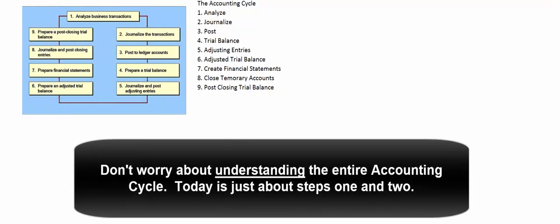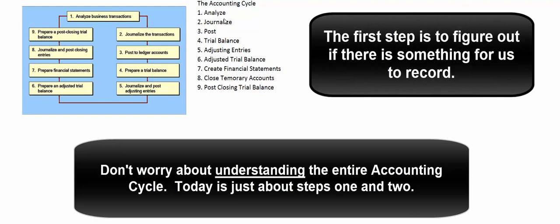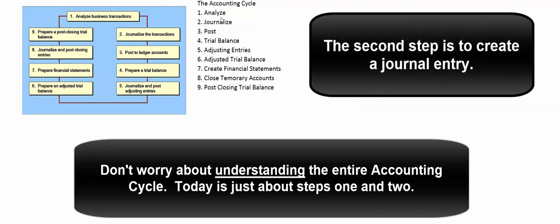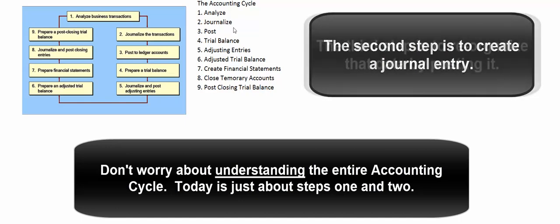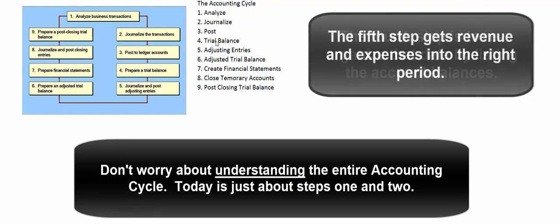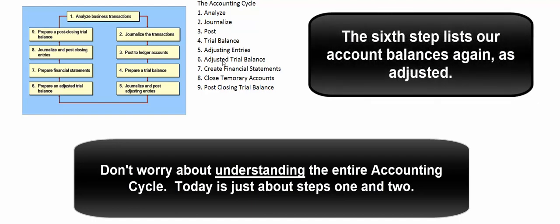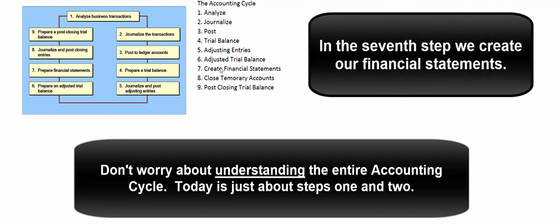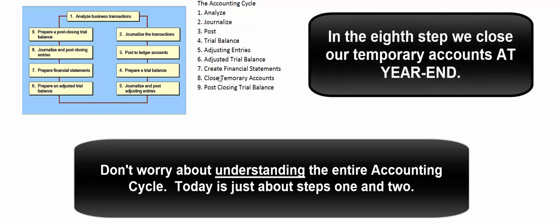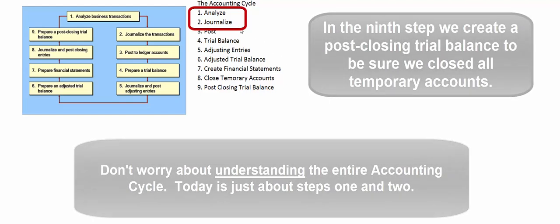The accounting cycle is either eight or nine steps depending on your accounting text — our book uses nine. The first step is to analyze a transaction to see if there's anything to record. If there is, we create a journal entry. Then we post data into individual accounts, strike a trial balance to ensure equal debits and credits, make adjustments to get revenue and expenses in the right periods, do an adjusted trial balance, create financial statements, close out temporary accounts, and do a post-closing trial balance. Today we're just covering steps one and two.